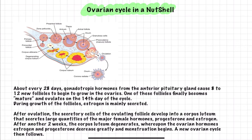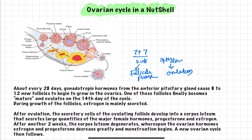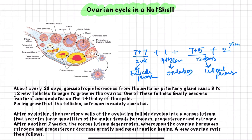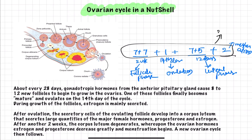Let us look at the timeline. The first two weeks — 7 plus 7 days — make up the follicular phase. On the 14th day, ovulation is happening. Then the next 12 days are known as the luteal phase. The last two days, menstruation occurs. If you add all these, you get nearly 28 to 29 days.